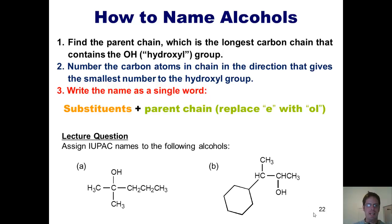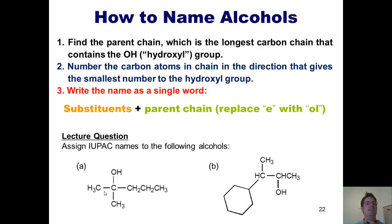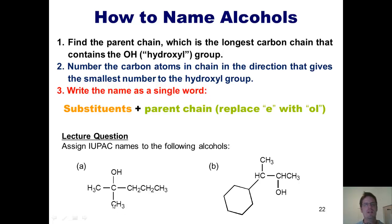Here are some examples. The longest chain that contains the OH is 5 carbons long, with the OH on carbon number 2 numbering left to right. A 5-carbon alkane is called pentane; because this is an alcohol, we replace the final E with -ol, giving 2-pentanol. There is also a CH3 on carbon 2, so we call this molecule 2-methyl-2-pentanol. It's also correct to write it as 2-methylpentan-2-ol.